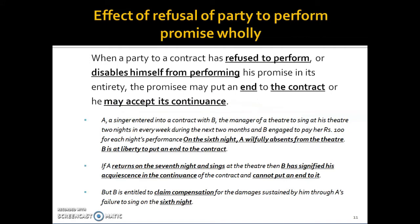When a party to a contract has refused to perform or has disabled himself from performing his promise in its entirety, the promisee may put an end to the contract. For example, if I promised to sell my horse to you for 10,000 rupees and you see someone else walking away with that horse — I have sold it to someone else — I have disabled myself from performing this contract with you. In that case, the promisee may put an end to the contract or accept its continuance.